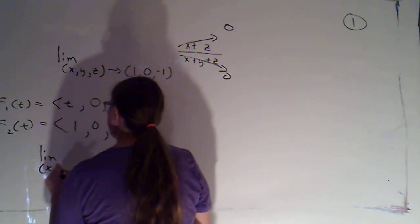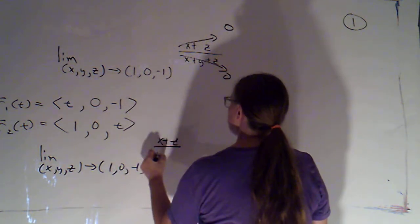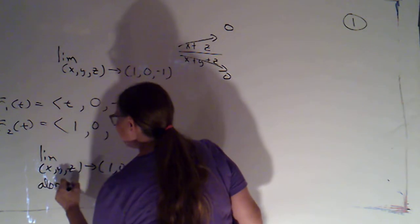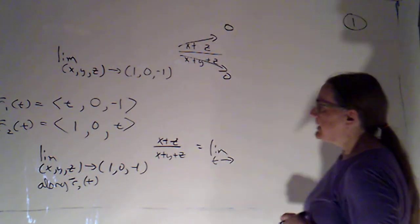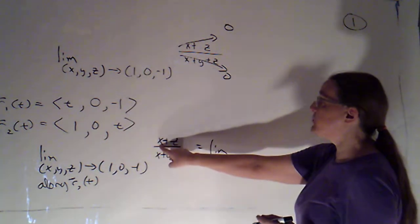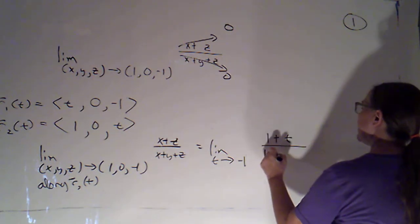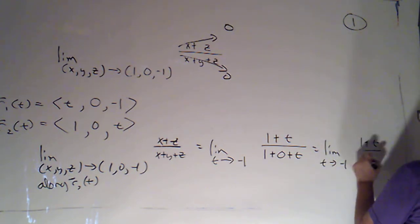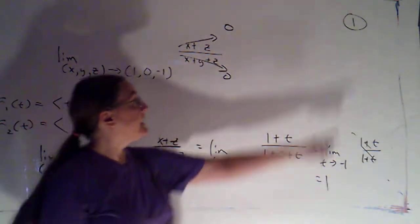Now, if I look at the limit as (x, y, z) approaches (1, 0, -1) of (x + z)/(x + y + z), and I forgot to specify it, I meant to say this is going to be along R2(t). So now I can say that's going to be the limit as t approaches... t is going to have to be approaching negative 1 this time. And I'm replacing x with 1, y with 0, and z with t. So we'll have (1 + t)/(1 + 0 + t). But that's the limit as t approaches negative 1 of (1 + t)/(1 + t). And the same thing on top and bottom. That's going to cancel. That's going to give me 1. Same thing I got last time.